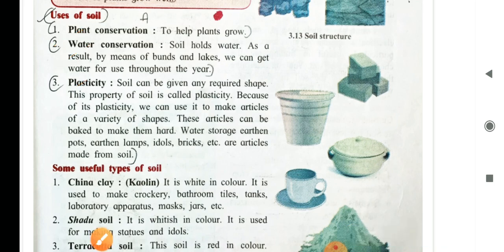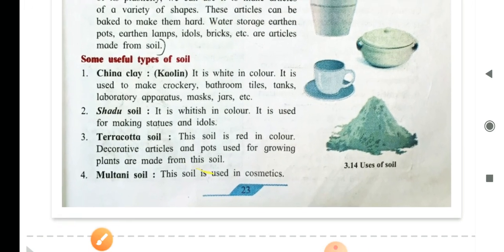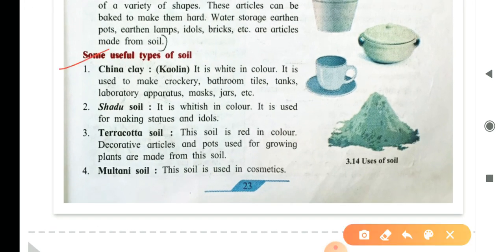Now, let us go to some useful types of soil. First one, china clay or kaolin. It is white in color. It is used to make crockery, bathroom tiles, tanks, laboratory apparatus, masks, jars, etc.